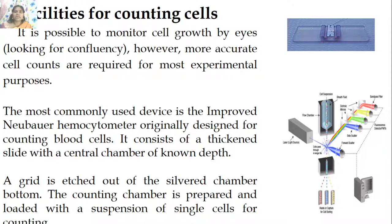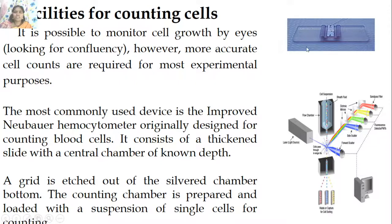For cell counting, it is possible to monitor cell growth by eye; however, more accurate cell counts are required for experimental purposes. This is done using a Neubauer chamber (hemocytometer), which consists of a thick slide with a central chamber of defined depth. Flow cytometry is also a technique employed. A grid is etched in the silver chamber bottom, and the counting chamber is loaded with a suspension of single cells for counting.